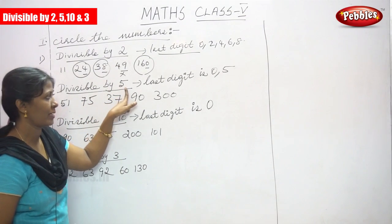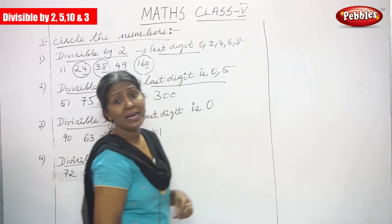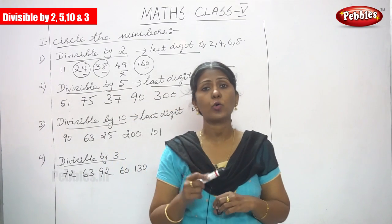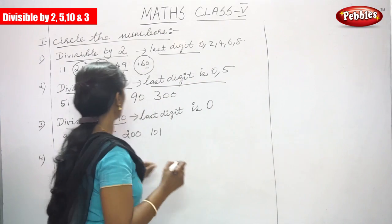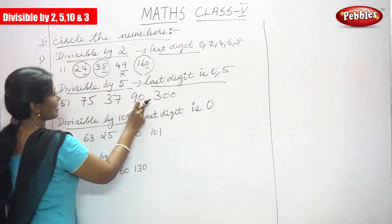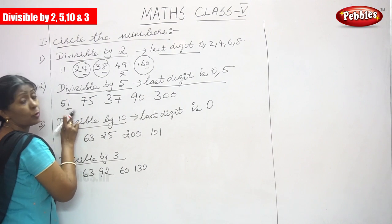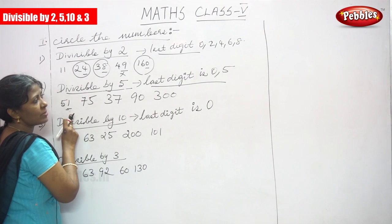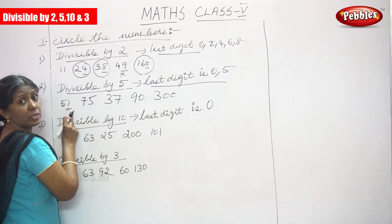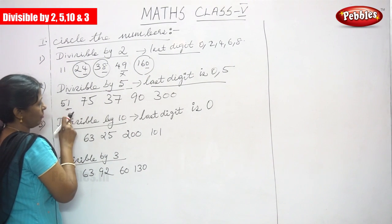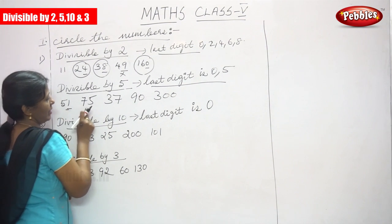Now going to the next sum: divisible by 5. The rule is if the last digit ends with 0 or 5, it is divisible by 5. First number is 51 — the last digit is 1. So it is not divisible by 5, because the last digit must end with 0 or 5.